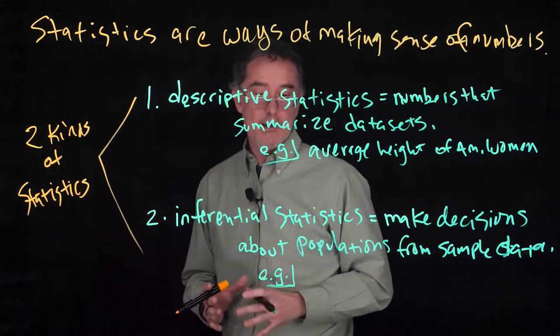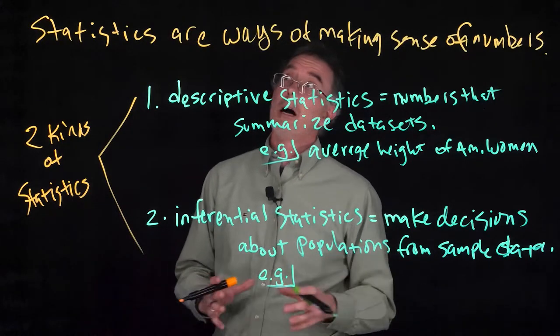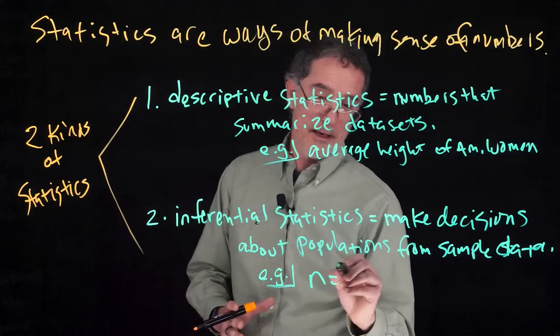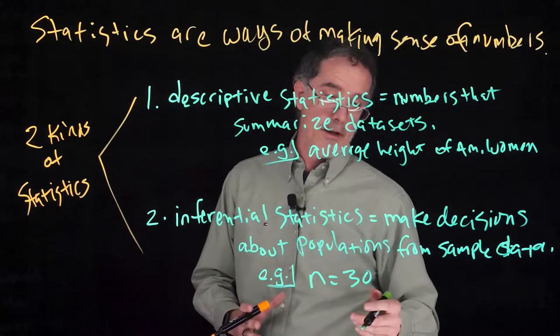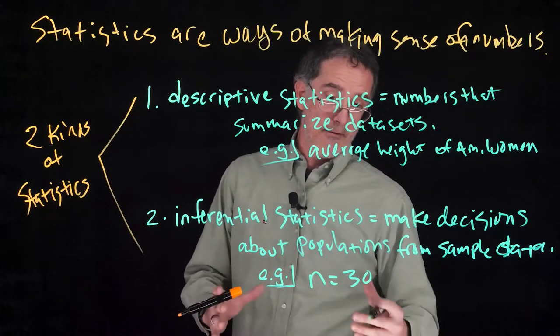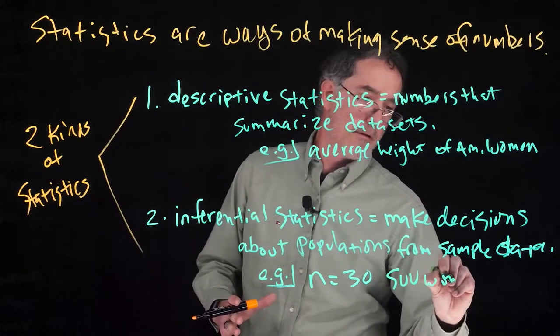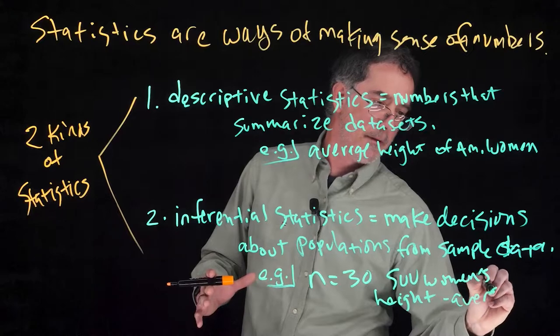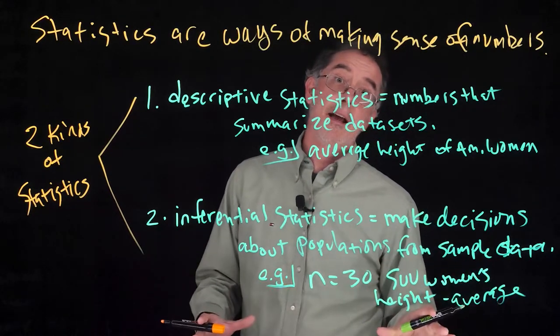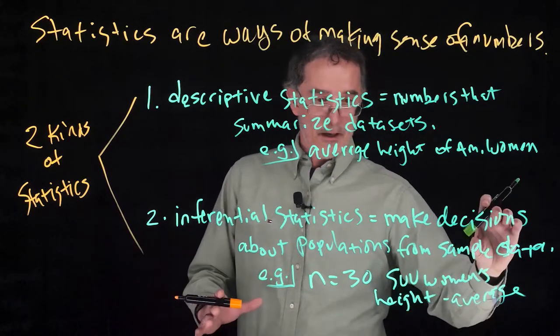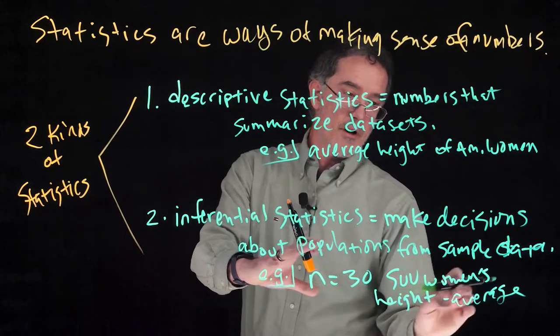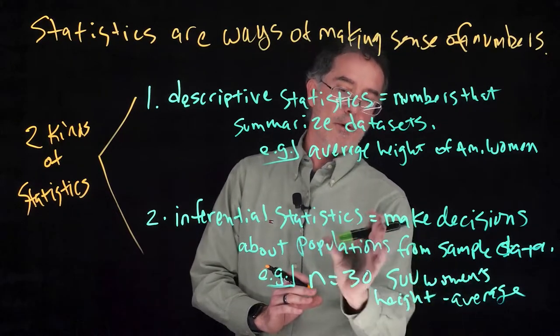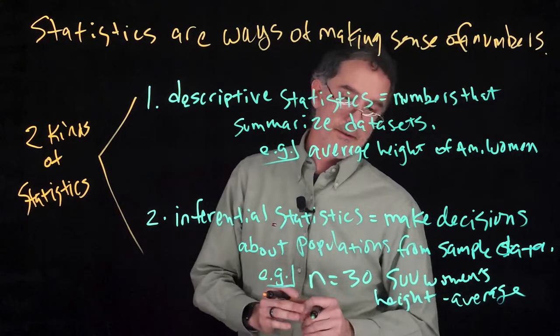For example, if you are trying to figure out how tall female students are at Southern Utah University, you could get a sample, the sample size of 30. You could measure the height of 30 SUU women, and that sample's average height, you could use this average as your best guess from this sample at the overall average for all SUU women in the population, even though you didn't measure all of those women. You just measured a subsample or a sample of the population, and that would be a way to guess at that population. That's an inferential statistical approach, and that's called the point estimate.